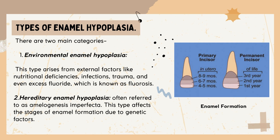Let's talk about the types of enamel hypoplasia. There are two main categories. First, we have environmental enamel hypoplasia, which arises from external factors like nutritional deficiencies, infections, trauma, and even excess fluoride, known as fluorosis. Then there's hereditary enamel hypoplasia, often referred to as amelogenesis imperfecta, which affects the stages of enamel formation due to genetic factors.